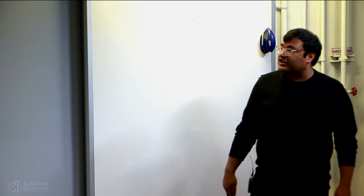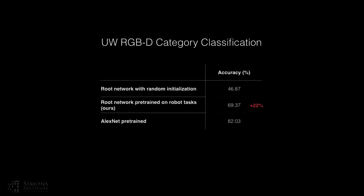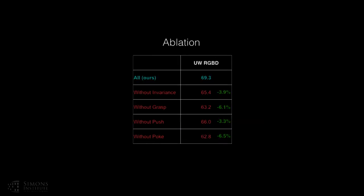In terms of representation, we end up learning reasonable nearest neighbors — for bottles, we get more bottles. For classification: random initialization gives 46%; AlexNet pre-trained with ImageNet gives 82%; our approach gives 69% mean average precision. We also show that each task is important: without grasping data, we see the biggest performance drop; without poking data, a big drop as well. All these data points are really useful — no single data point overwhelms the others.